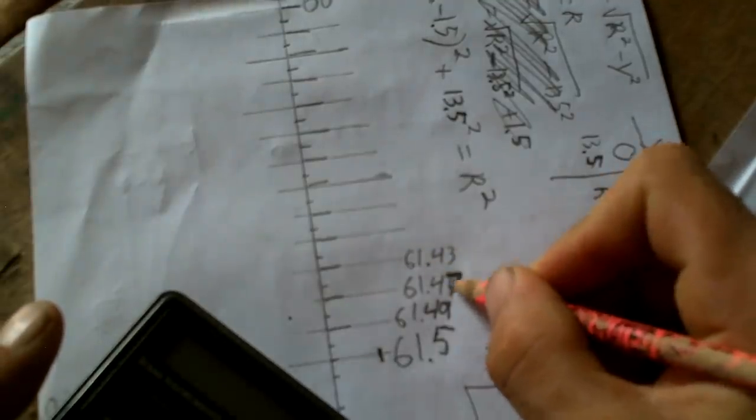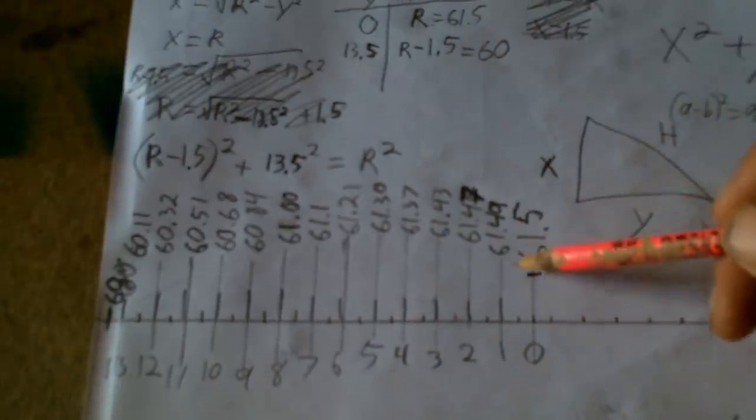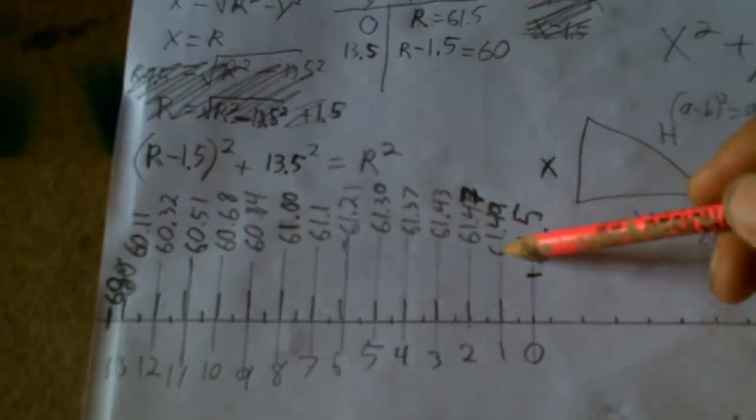I rounded that one. It should be 4.7, not 4.6. Now I just need to measure from here out each of these numbers. Minus 60, because this line is already at 60.